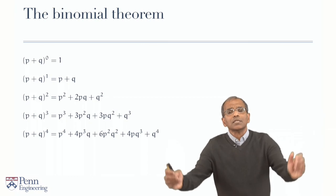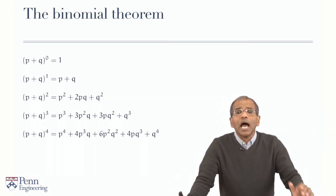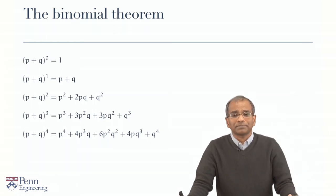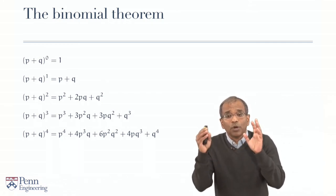Let's start with two numbers, p and q. We're going to sum them and raise them to a power. p plus q to the power 0 is by definition 1. Anything to the power 0 is 1.